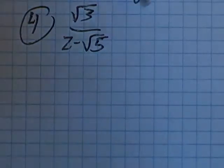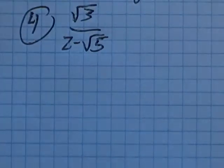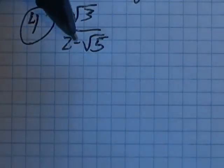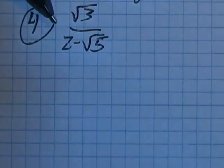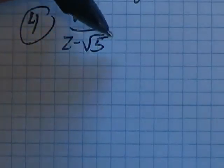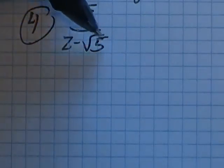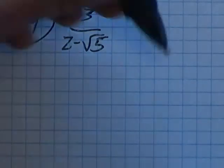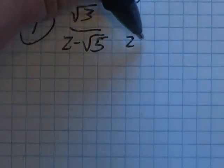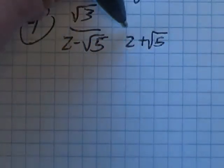And the issue here is that we have a radical in the denominator. And we're not supposed to, we can't leave it there. So I need to get rid of this root five. And since this isn't just root five down here, this is two minus root five, I'm gonna use its conjugate, two plus root five to get rid of it.